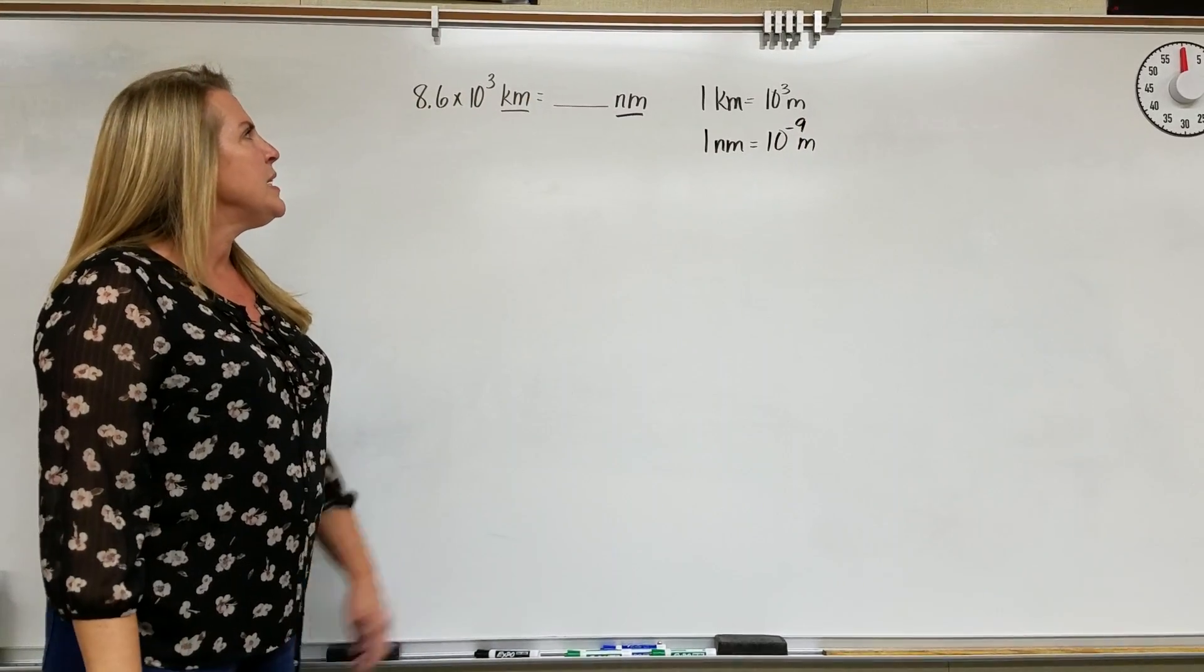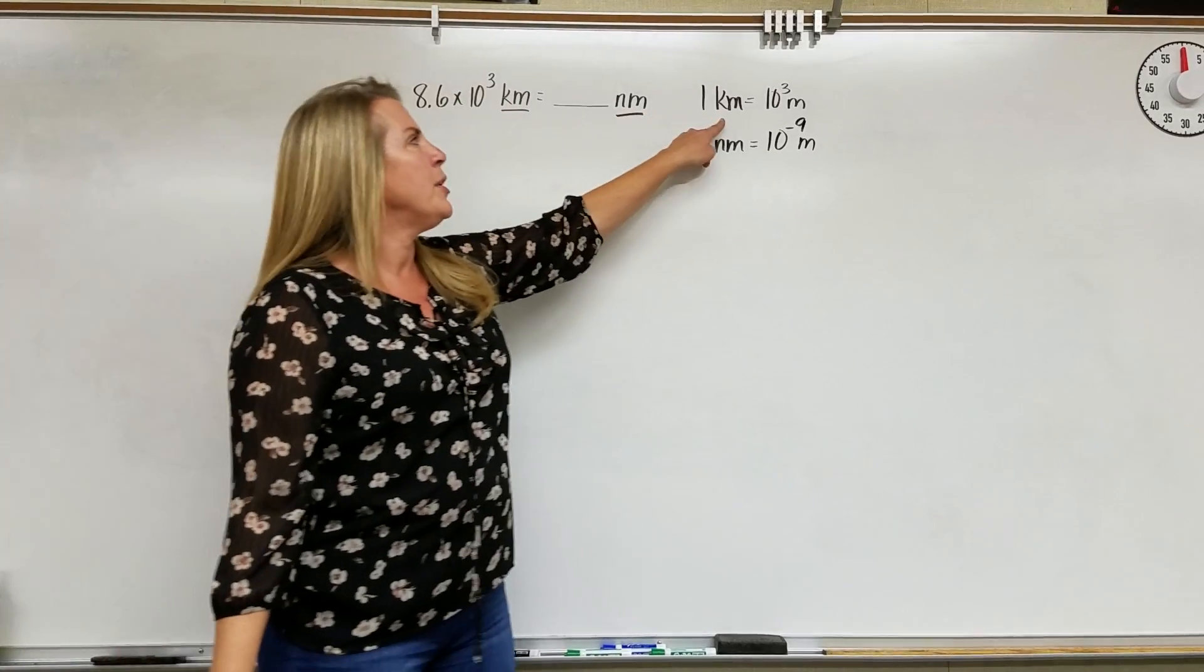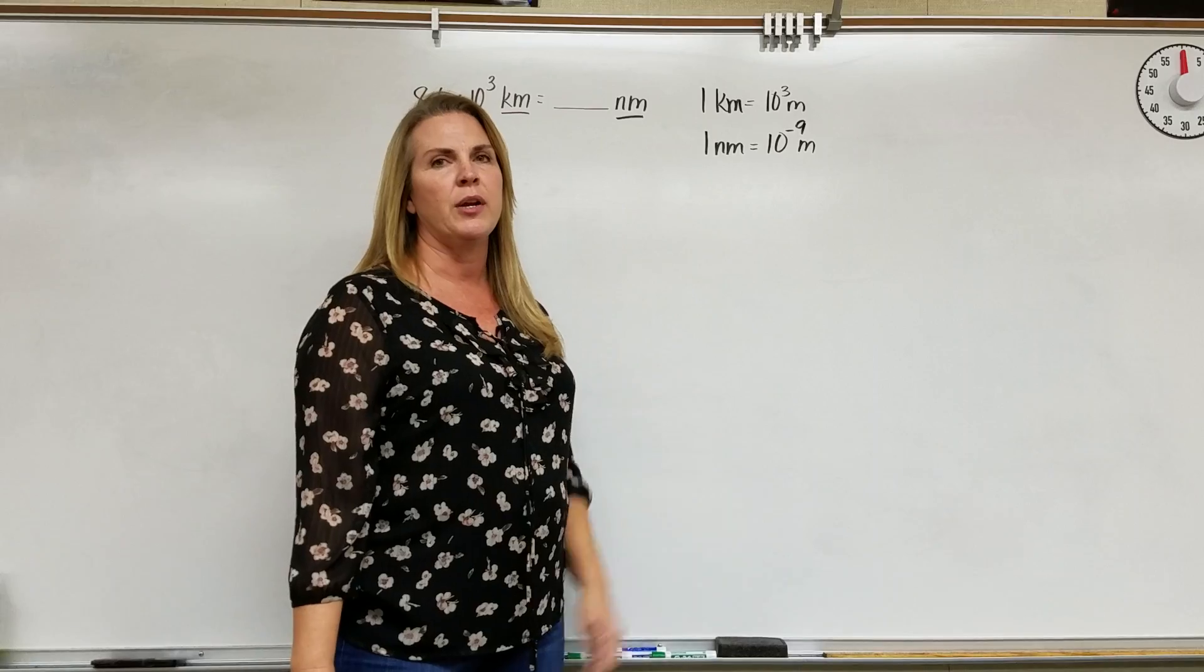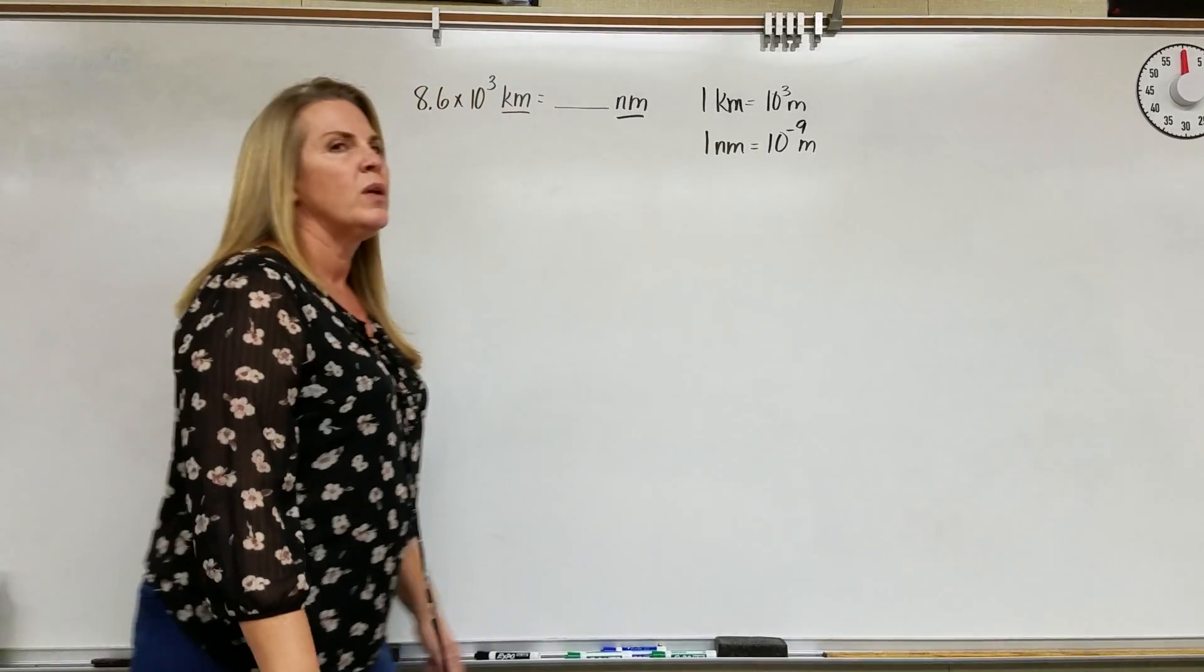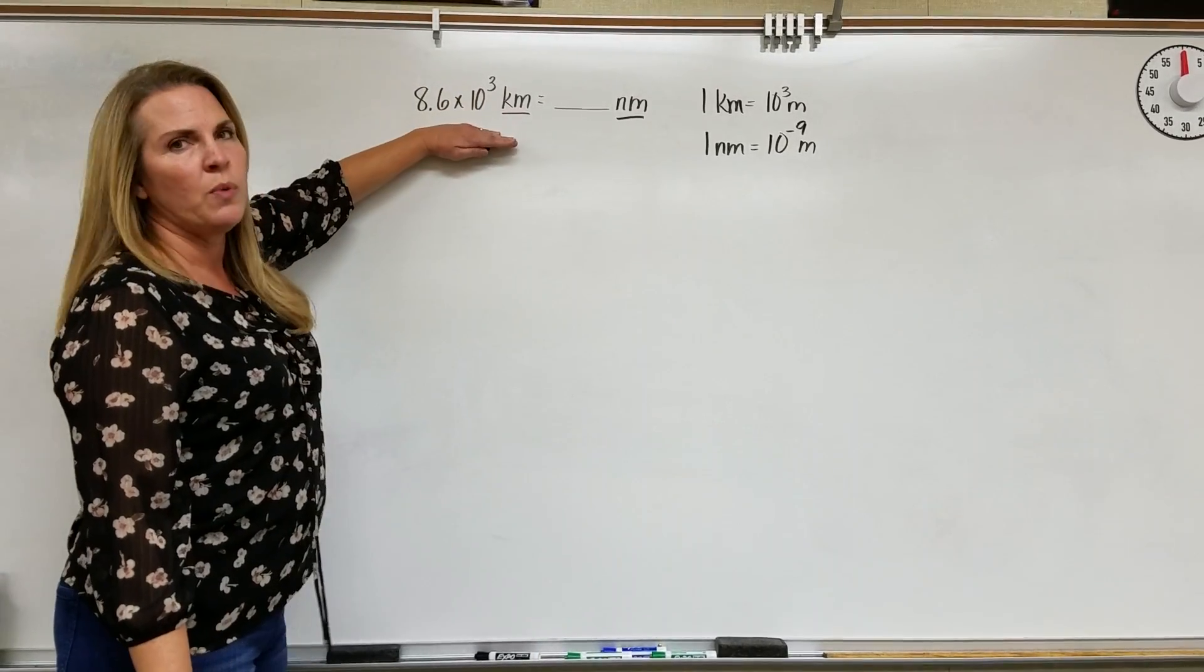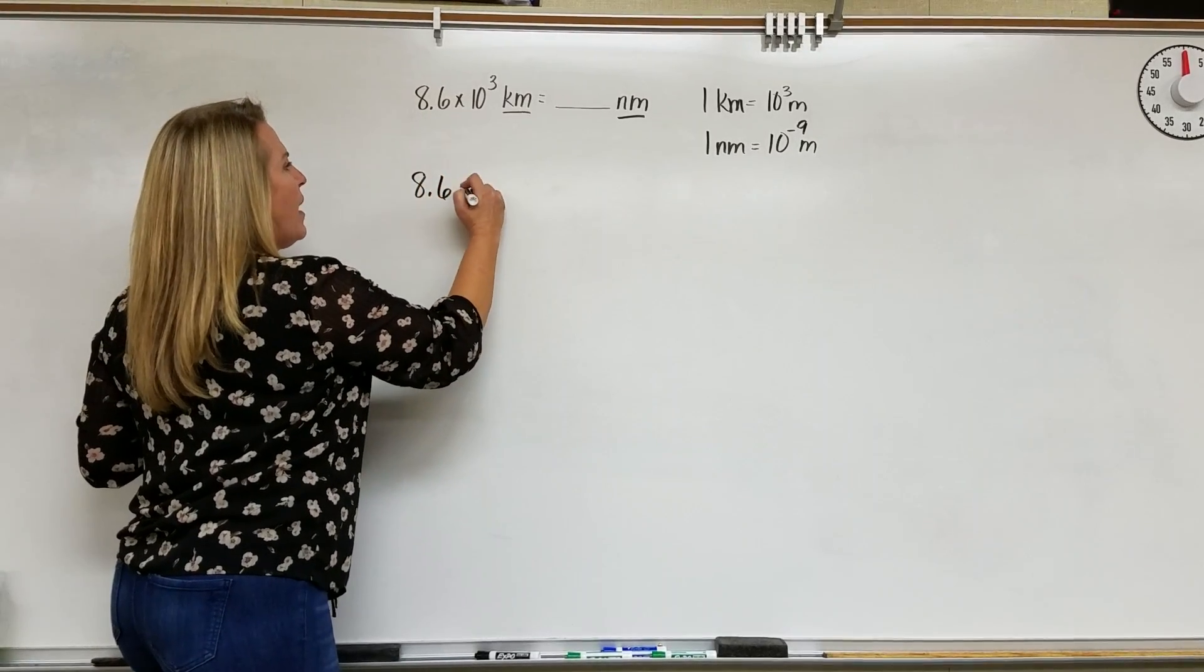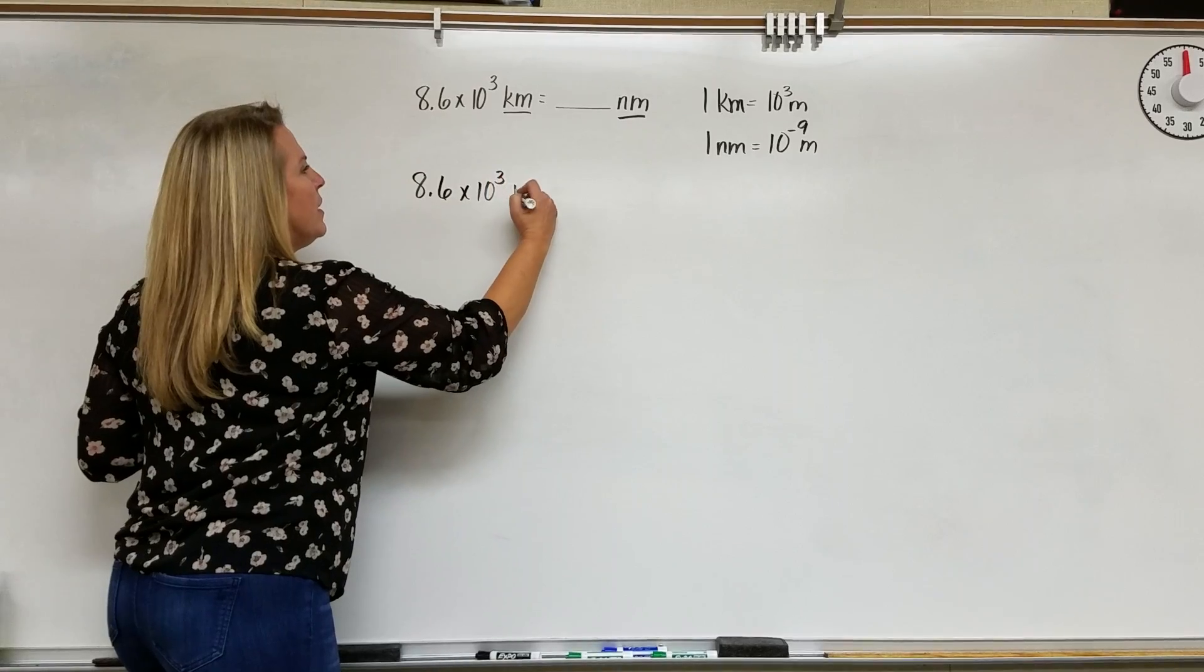So I'm hoping that you can see that if we start here at kilometers, we can go from kilometers to meters, and from meters into nanometers. We're ready to go. So whenever we do a problem, we always go back to what was given. So we were given 8.6 times 10 to the third kilometers.